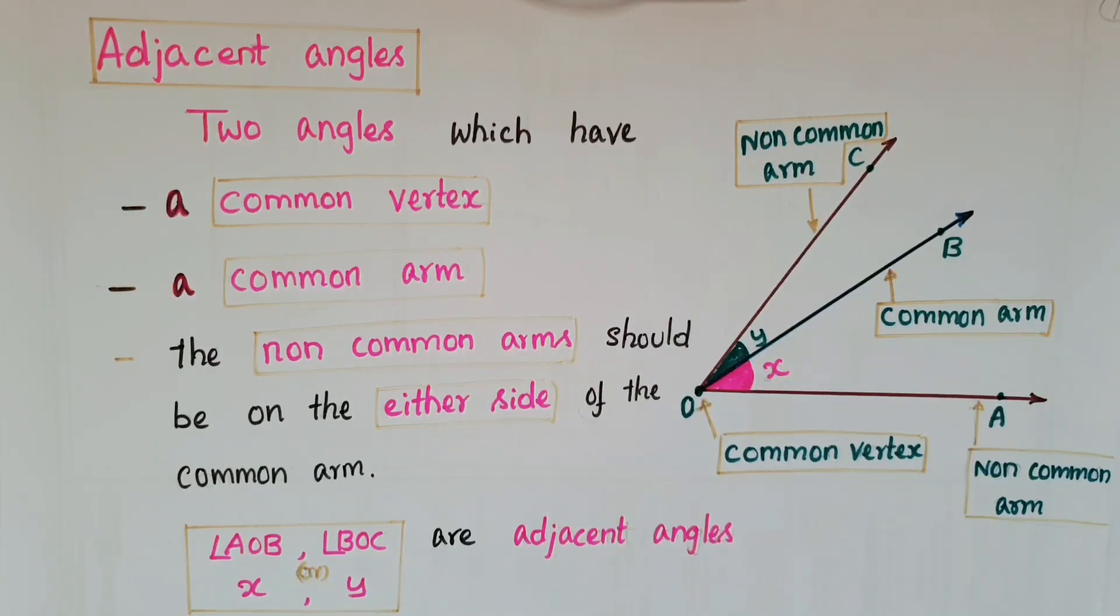Hello everyone. Today I am going to tell about adjacent angles. If you observe this figure, O is the common vertex for angles X and Y, and OB is the common arm for these two angles. OA and OC are non-common arms, and these two arms are on either side of this common arm.